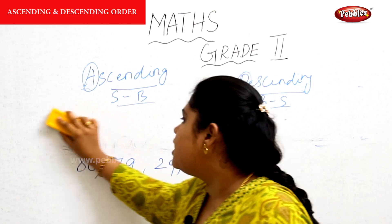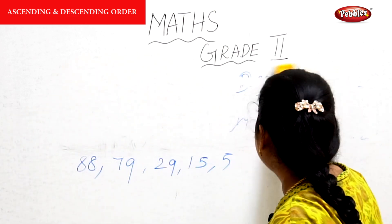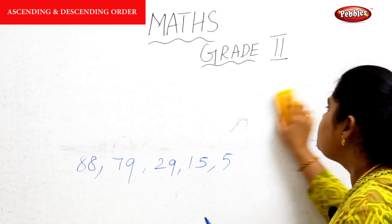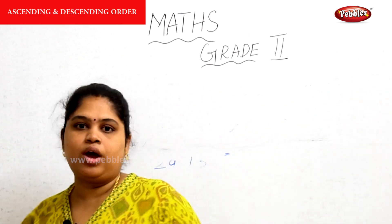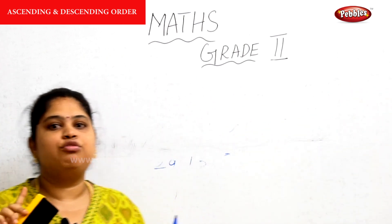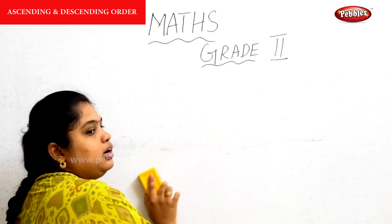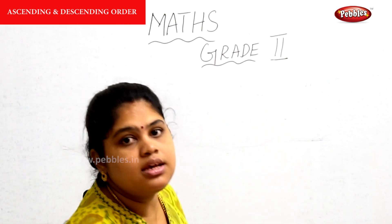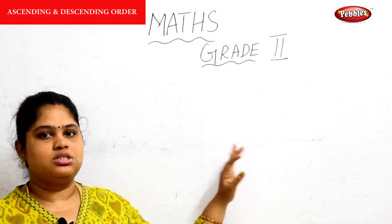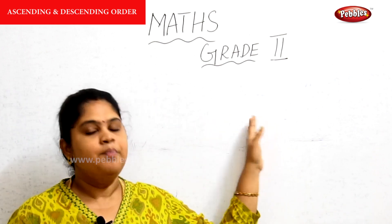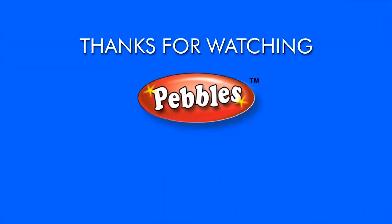To recap: ascending order means small to big, and descending order means big to small. You have to be very careful — ascending means small to big. So this is what we have seen today.